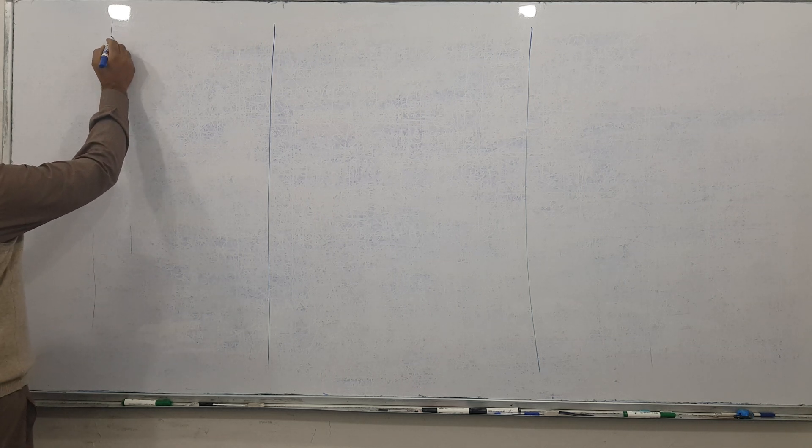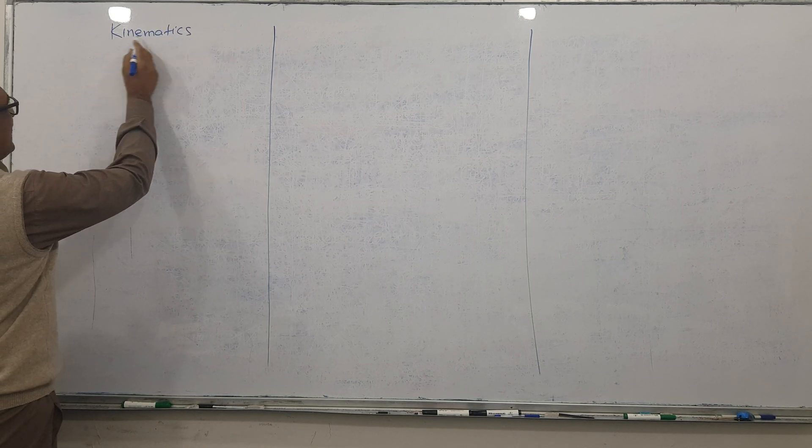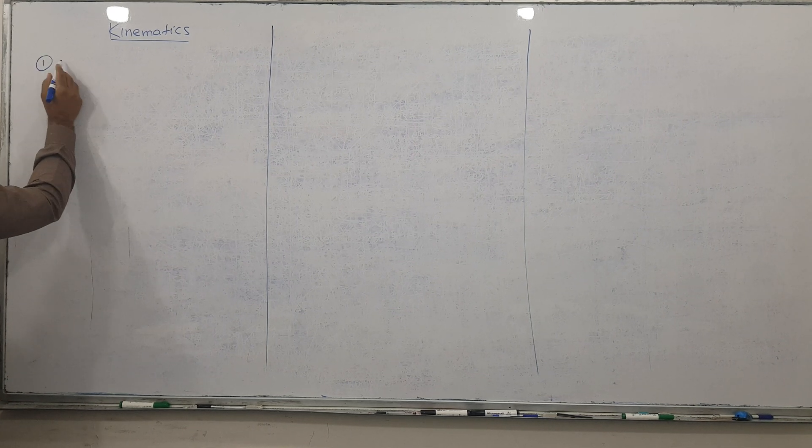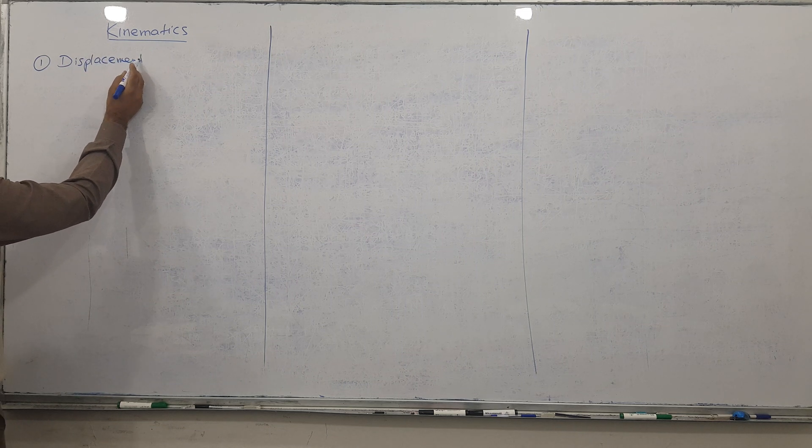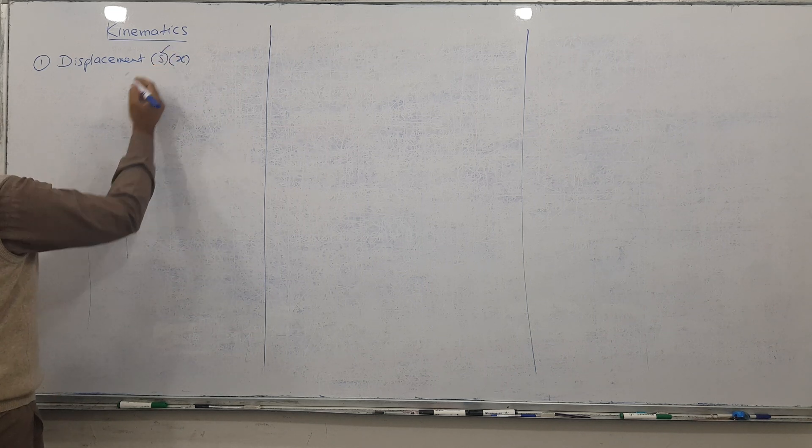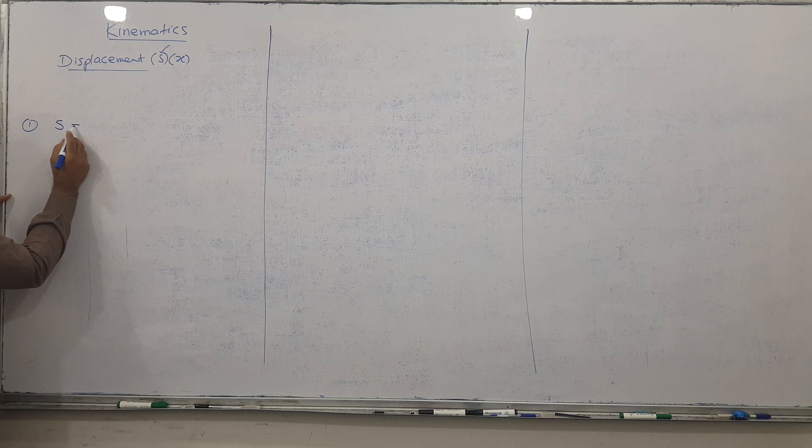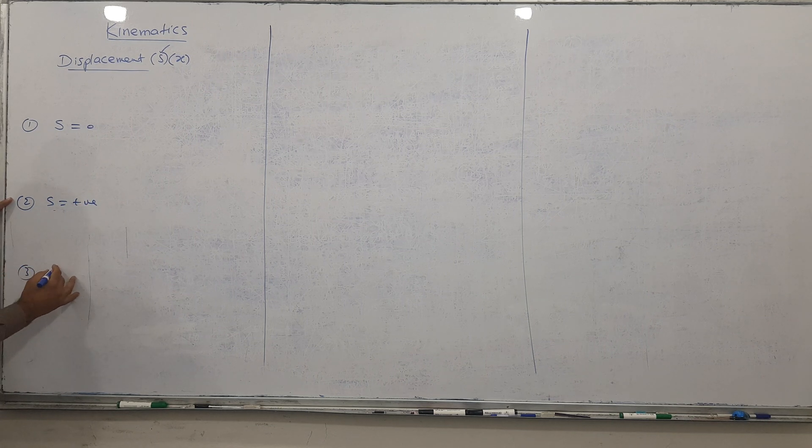Today is the first lecture of kinematics, and I'm going to teach you nine points which are very important. First, I'm going to explain displacement. Displacement is represented by s, or sometimes x, but mostly by s. Displacement has three points. Sometimes s equals zero, sometimes s is positive, and sometimes s is negative.